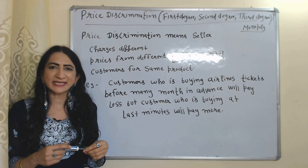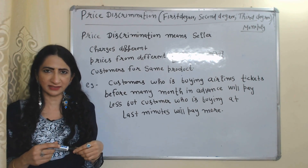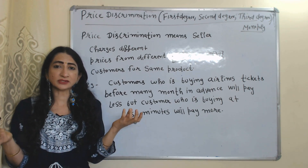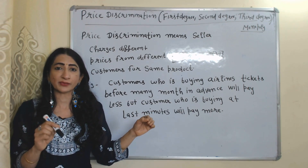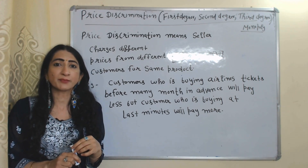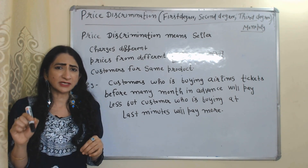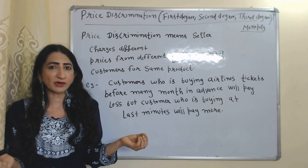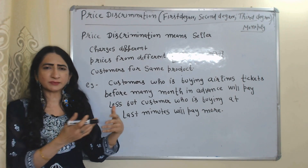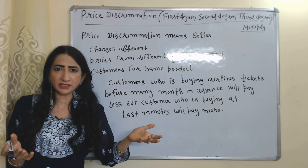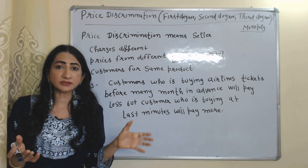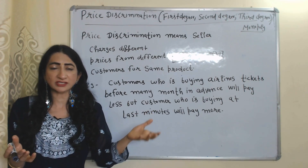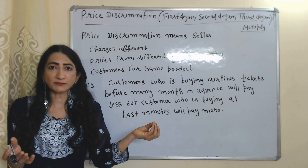Hello everyone, my name is Minnie Sati. I hope you all are staying healthy. Today we are going to talk about price discrimination. Price discrimination is a situation where a seller charges different prices from different customers for the same product. For example, a customer who is buying airline tickets many months in advance will pay less, but a customer who is buying at the last minute will pay more.